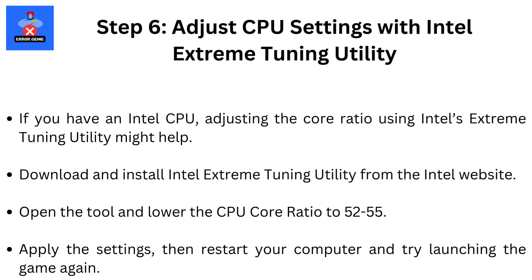Step 6: Adjust CPU settings with Intel Extreme Tuning Utility. If you have an Intel CPU, adjusting the core ratio using Intel's Extreme Tuning Utility might help. Download and install Intel Extreme Tuning Utility from the Intel website. Open the tool and lower the CPU core ratio to 52–55. Apply the settings, then restart your computer and try launching the game again.